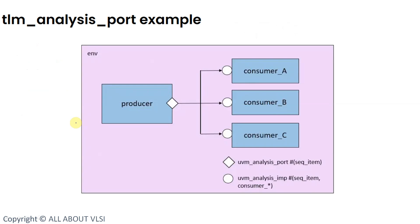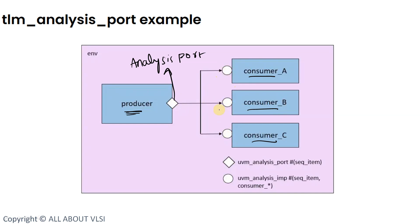Now let us see this example where we have a producer component having an analysis port. These circles are our analysis implementation ports. Consumer A, Consumer B, and Consumer C each have an analysis implementation port, and using a single analysis port we are connecting and accessing all three analysis implementation ports — basically connecting a single port to three analysis implementation ports. Let us try to implement this using our EDA playground.